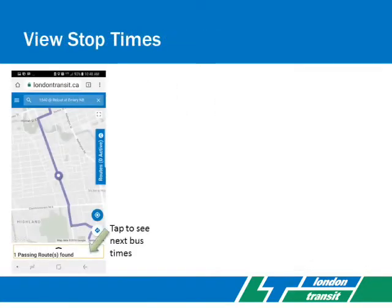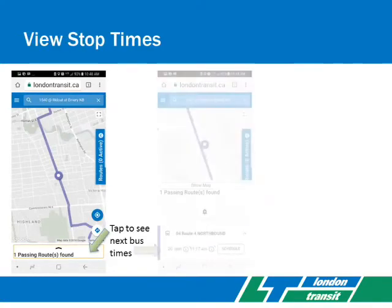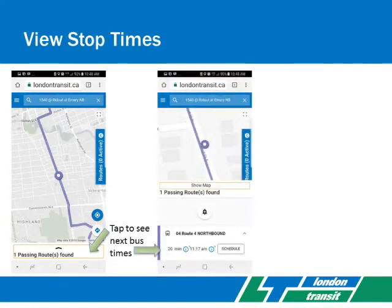A box with passing routes will appear at the bottom of the screen. Tap that box and, if necessary, the route you want to see. Next, bus times will be displayed.